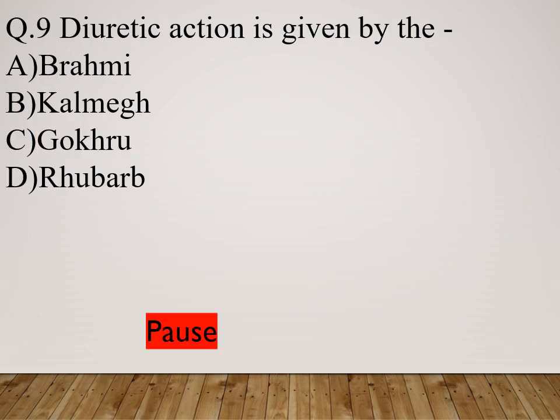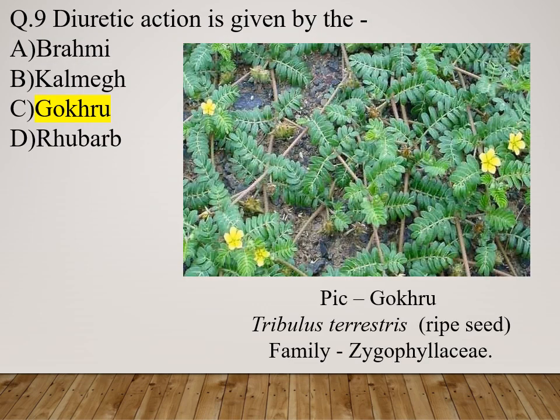Question 9: Diuretic action is given by which drug? Option A: Brahmi. Option B: Kalmegh. Option C: Gokru. Option D: Rubar. The right answer is Gokru. Tribulus terrestris — ripe seed is mainly used; family Zygophyllaceae.